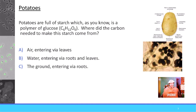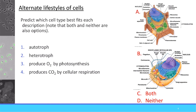The second question has you think about the lifestyles of cells. On the right we have a plant cell and an animal cell. Think about which cells are autotrophs, which ones are heterotrophs, which ones can produce oxygen by photosynthesis, and which ones can produce CO2 by cellular respiration. We will come back to these questions at the end of this topic, so go ahead and make an educated guess.